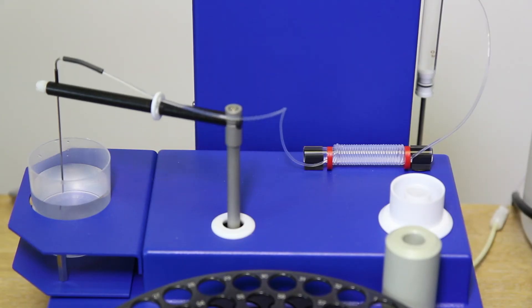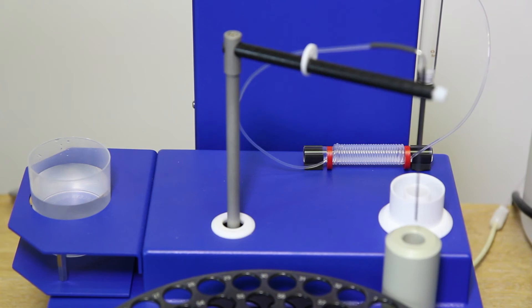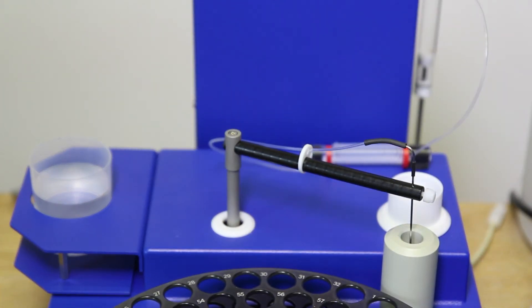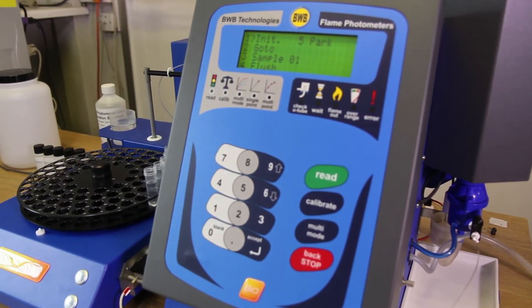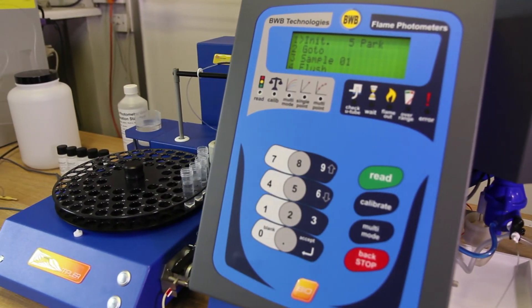The autodiluter reservoir is filled with deionized water, or BWB cesium diluent if internal reference is to be used. For the purpose of this tutorial, we will be using a right-handed BWB bioflame photometer.